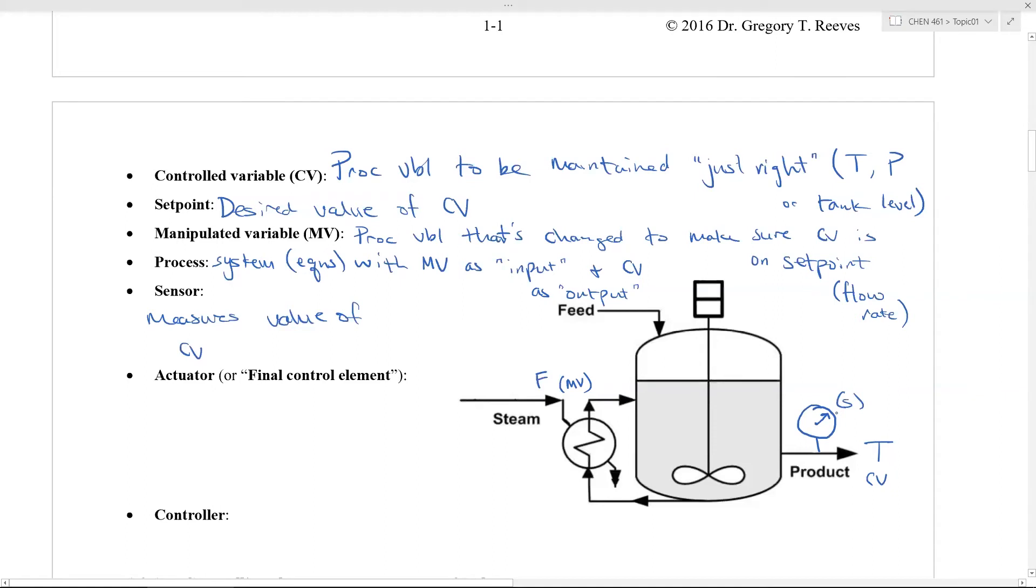You need to have something called the actuator, which is also in some sort of fancy way called the final control element. Actually, both of those are fancy words. It's basically just the valve. So let me go ahead and write down the full definition here: is the physical element that changes. So the value of the manipulated variable changes. And it's almost always a valve. Or it could be a pump. But both of those change flow rates. So your actuator is, in this case, a valve, and it has a little stem and a little half circle on top of it is the way it's drawn. That's your actuator.